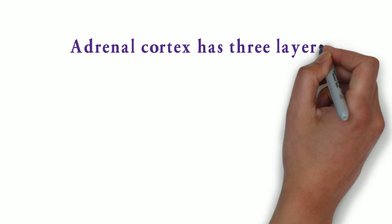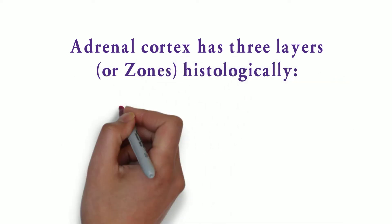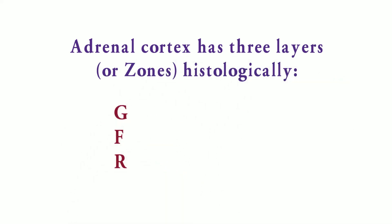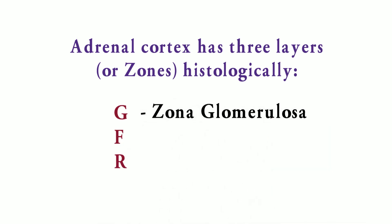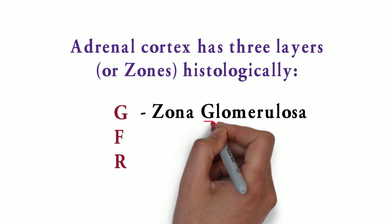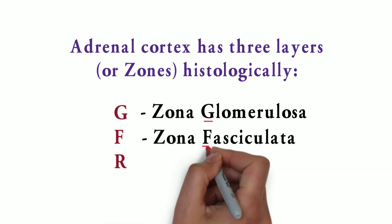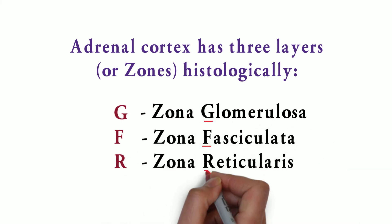The adrenal cortex has three layers or zones histologically. The mnemonic for the layers is GFR, from outside to inside. G stands for zona glomerulosa, F stands for zona fasciculata, and R stands for zona reticularis.